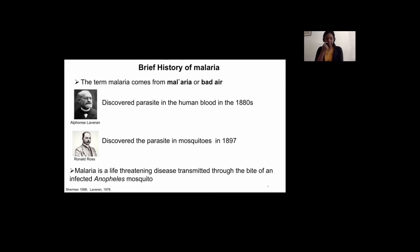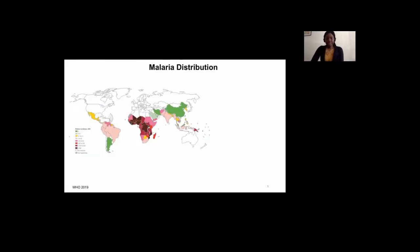Today we know that malaria is a life-threatening disease. It is transmitted through the bite of an infected female Anopheles mosquito to humans. Even though malaria has been around for a very long time, it still remains a major public health problem, especially in sub-Saharan Africa.